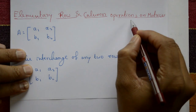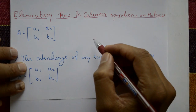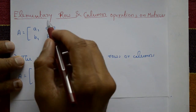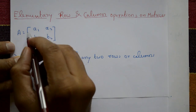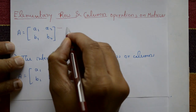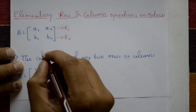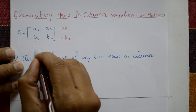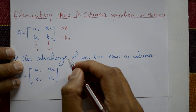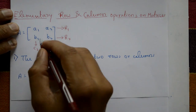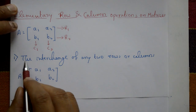Elementary row and column operations on matrices. First, know the method, then solve the examples. The matrix A is given — rows are called r1, r2, r3, r4 and columns are called c1, c2, c3, c4, like this, row-wise and column-wise.